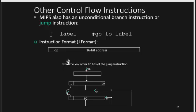Jump instructions have an opcode and a 26-bit address field. The 26-bit address is the target to jump to. Jump is an unconditional branch instruction — unlike branch instructions which require a condition, jump always transfers control to the designated label when the instruction is executed.